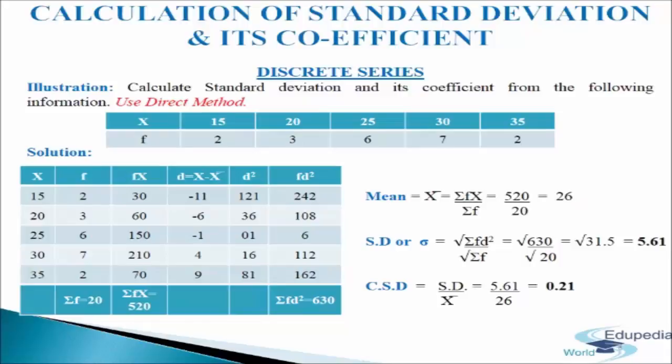Now in the fourth column, d equals x minus mean. x is 15, mean is 26, giving minus 11. 20 minus 26 gives minus 6. 25 minus 26 gives minus 1. 30 minus 26 gives 4. 35 minus 26 gives 9.